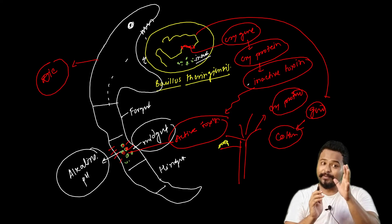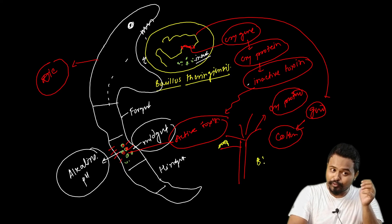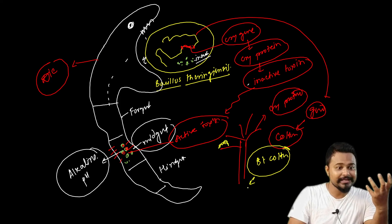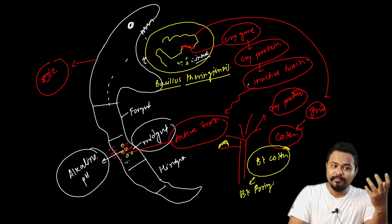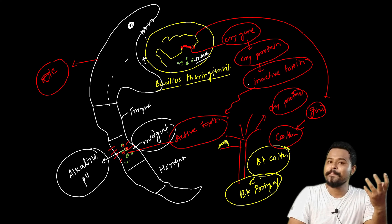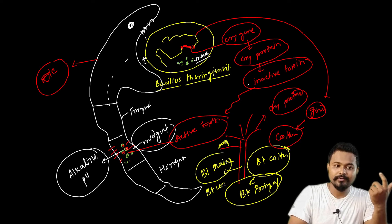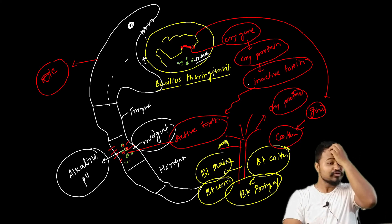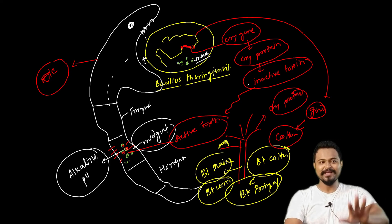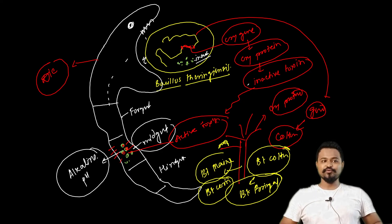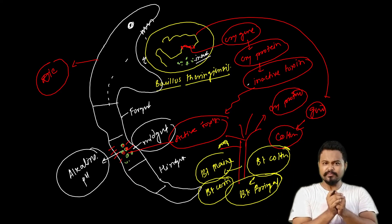This technique has been used to develop other crops as well. Varieties like Bt brinjal and Bt maize have been developed using this same technique, where the Bacillus thuringiensis gene is used.